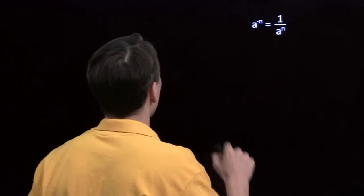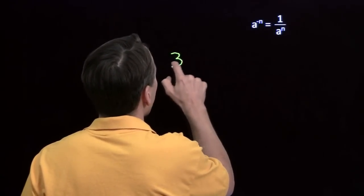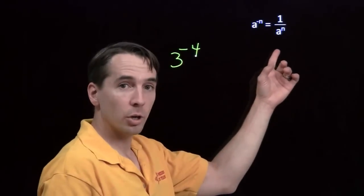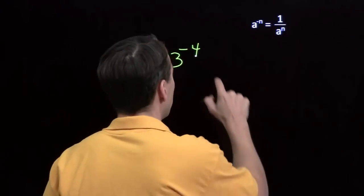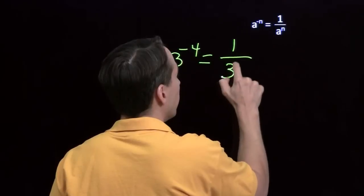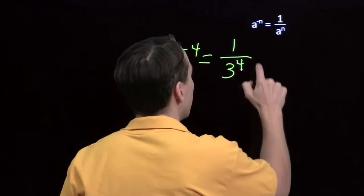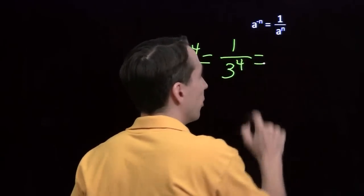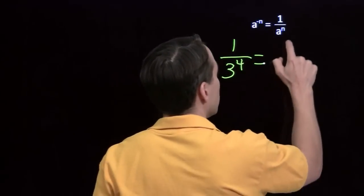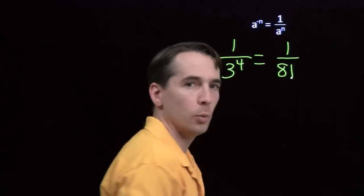Let's take a look at a couple of examples. Let's try 3 to the negative 4. We just use our rule: this is the reciprocal of 3 to the 4th. 3 to the 4th — 3 times 3 is 9, times 3 is 27, times one more 3 — gives us 1 over 81.